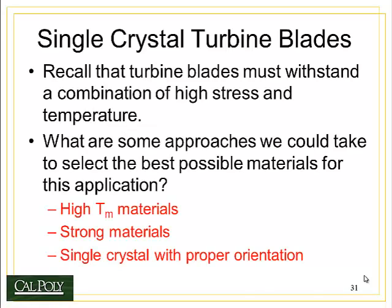It turns out that the best way to make a turbine blade for really high temperatures and very high rotational speeds is to make a single crystal turbine blade. We have to withstand both the temperature and the stress, and so in order to do that we have to prevent dislocations from moving. The only way we know how to do that is to make it hard for the dislocations to travel along the slip planes.